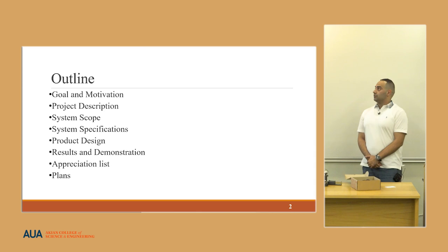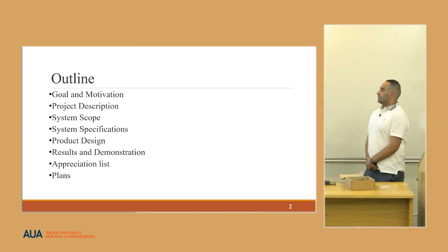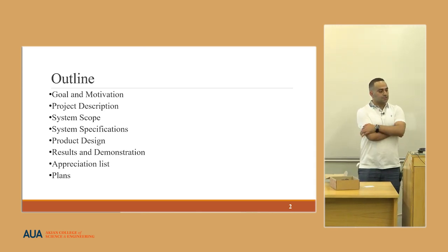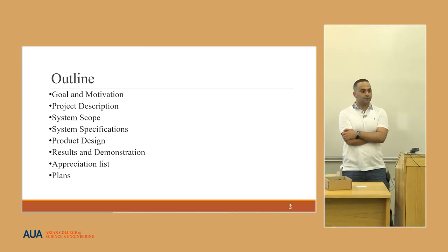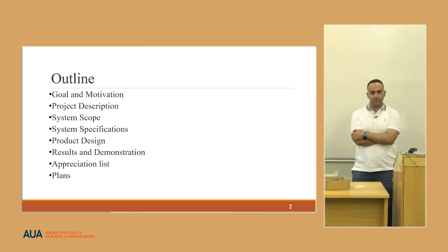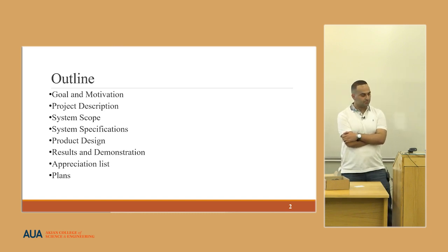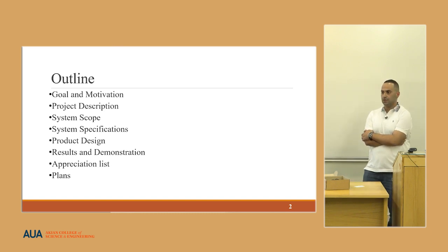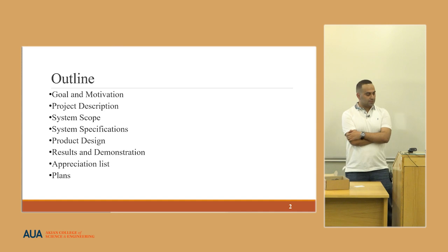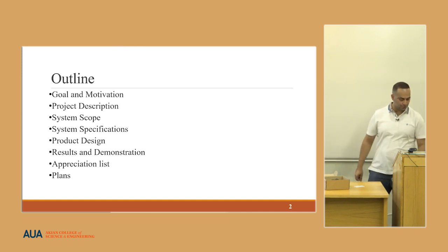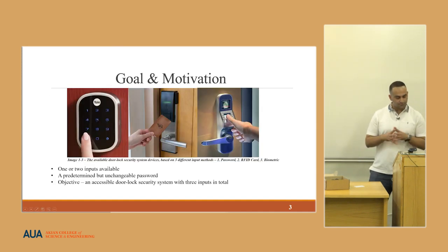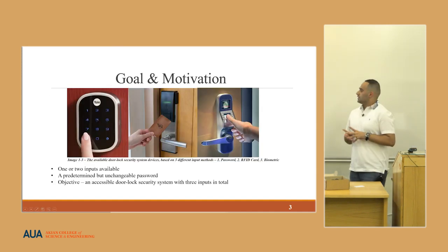This is the outline for the entire presentation. First I'm going to discuss the goal and motivation, then describe the project, explain the system behavior, the system specifications, product design, results, demonstration, appreciation list, and plans for the future.